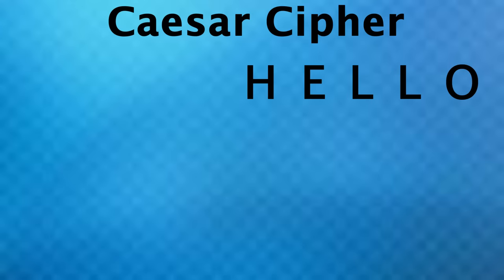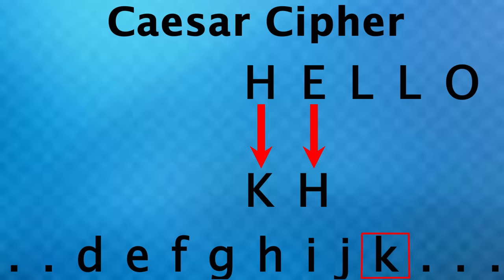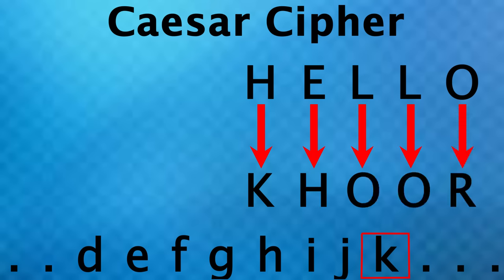So if I wanted to say hello, I'd write a word with those same letters shifted by three. Instead of H, I'd write K, since K is one, two, three letters past H. Instead of E, I'd write H. L goes to O, and O goes to R. So this is the encrypted message that I send you. Then when you receive this note, all you do is shift the letters three to the left, and you get the original message back.